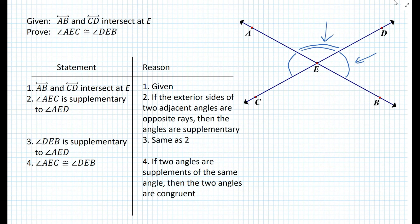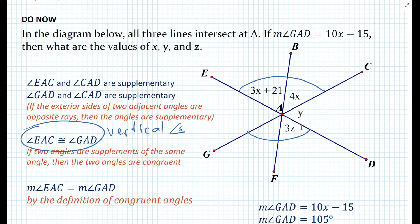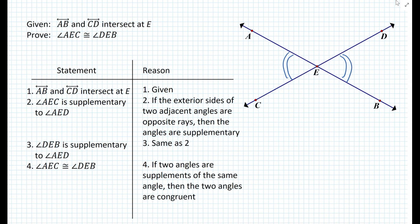And there you go — we proved it. So what does this mean? It means we have proven that this is now always true: that these two angles, which are vertical angles, are always going to be congruent. In the do now, we had to do all this work using supplementary angles. From now on, we don't have to do that anymore — we can simply state that vertical angles are congruent. Going back to the diagram, it also means that the other pair of vertical angles are also congruent, and that can be proven in a very similar way.